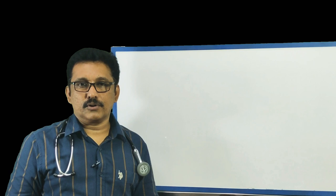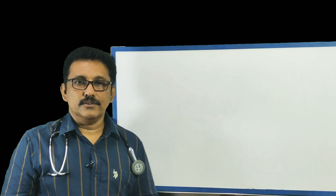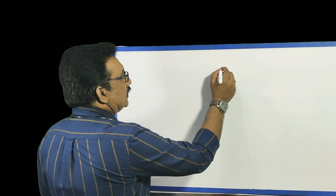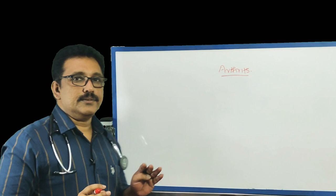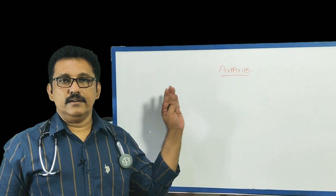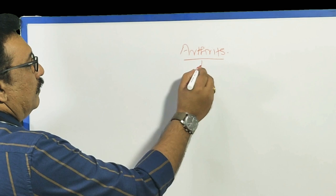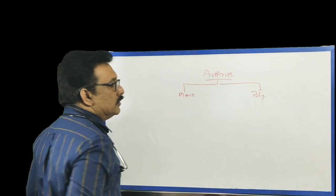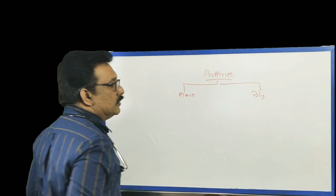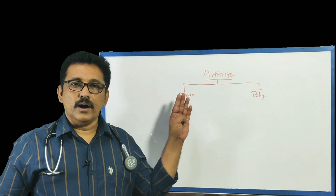Once you diagnose arthritis based on inflammatory signs around the joint, you should classify the joint disease according to a protocol. I will discuss the classification of arthritis using a simple chart. There are two major types of arthritis: monoarthritis, where only one joint is involved, and polyarthritis, where multiple joints are involved.